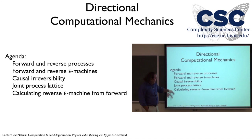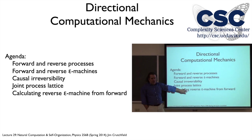Some conditional joint distribution it usually turns out to be. Then I'll go through how, when we reverse time, we reverse a given epsilon machine — think of it as a generator that generates the process in forward time — and how we can, starting from the machine, reverse the machine and calculate the reverse time epsilon machine.